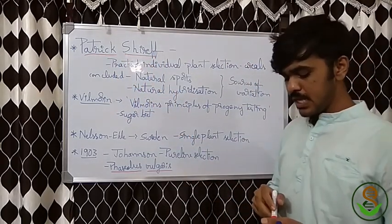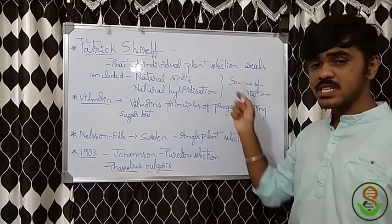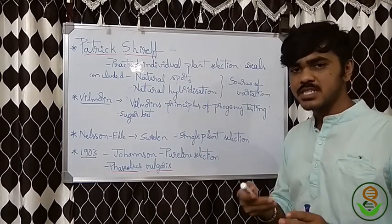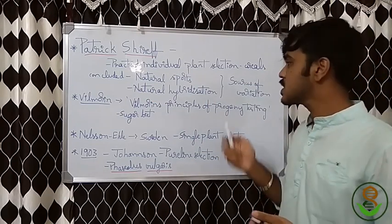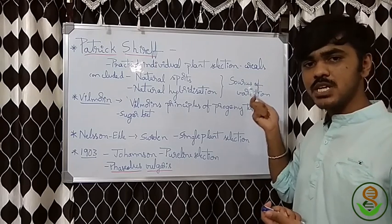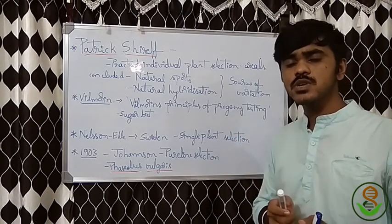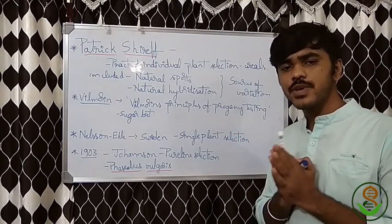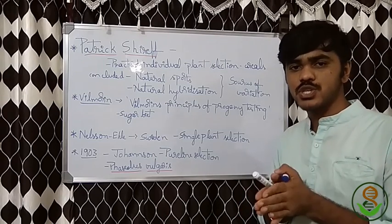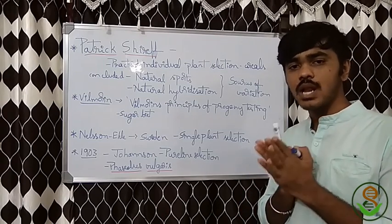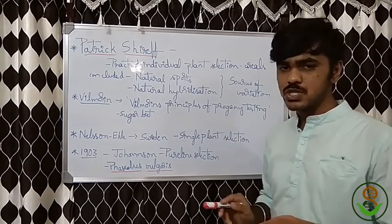Patrick Shrub is responsible for practicing individual plant selection. He selected plants individually, especially working on cereals. He concluded that the sources of variation are two: natural sports — meaning mutation — and natural hybridization. These are the main important sources of variation given by Patrick Shrub.